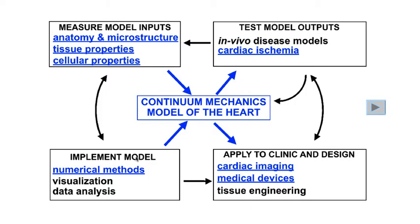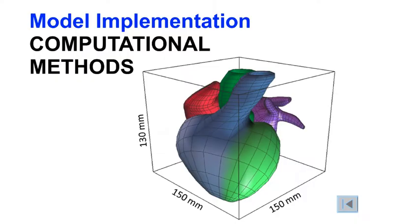To solve the continuum mechanics model that takes into account the complex geometry and fiber architecture, nonlinear mechanical properties, and dynamic contractile properties, we need to use computational methods. This is an example of a finite element model of the heart showing the right ventricle, the left ventricle, right atrium, left atrium, pulmonary artery, and aorta. The complex geometry is divided up into smaller, simpler shapes to facilitate the analysis on a computer.